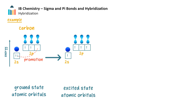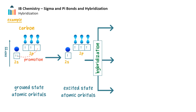Now there are four singly-occupied, or four half-filled, orbitals in the valence shell. This is called the excited state of carbon. These valence orbitals can then mix in one of three ways.